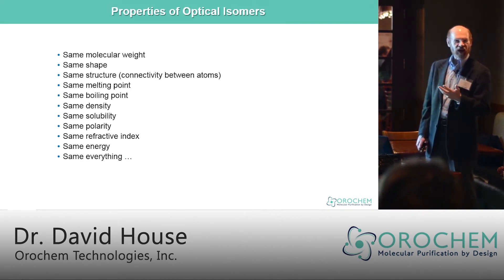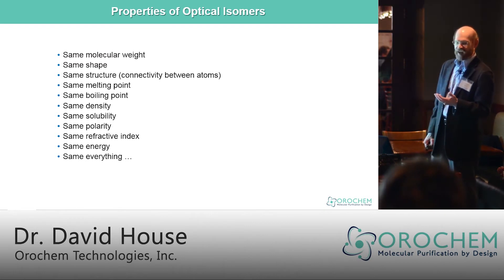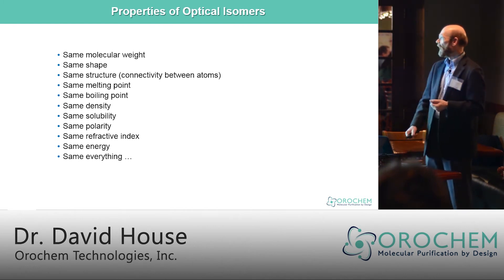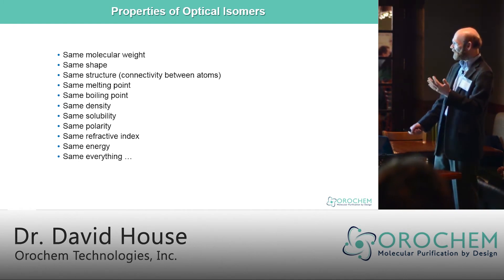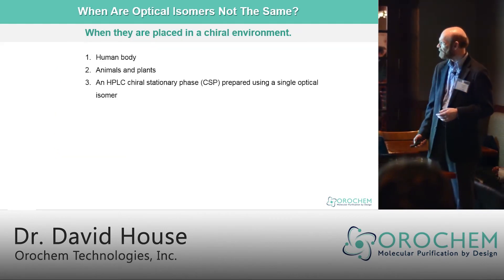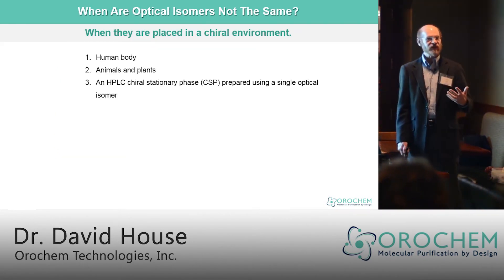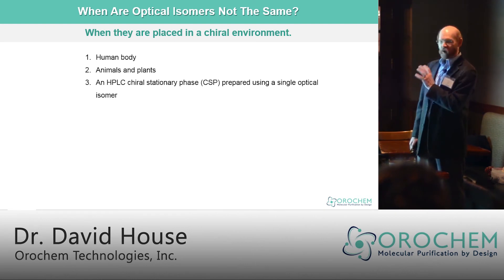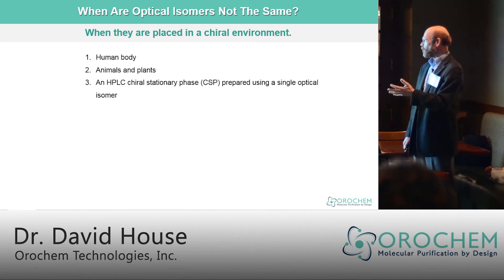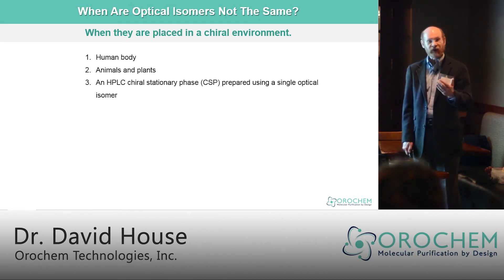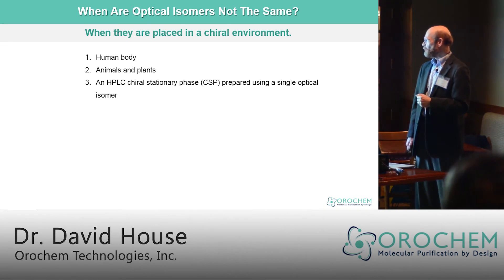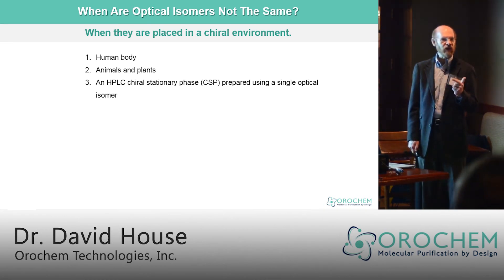The properties of optical isomers: they have the same molecular weight, the same shape, the same structure, connectivity among all the atoms, same melting point, density, solubility, energy — same everything. When are they not the same? When they're in the human body — remember, the human body is chiral — or in animals, plants, or an HPLC chiral stationary phase called a CSP that's been prepared using a single optical isomer.